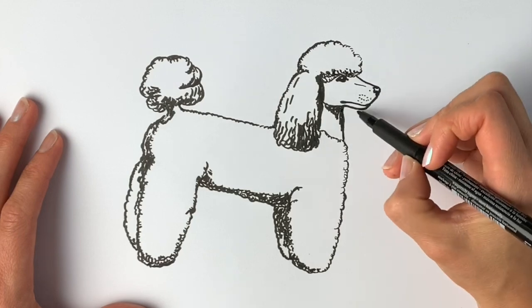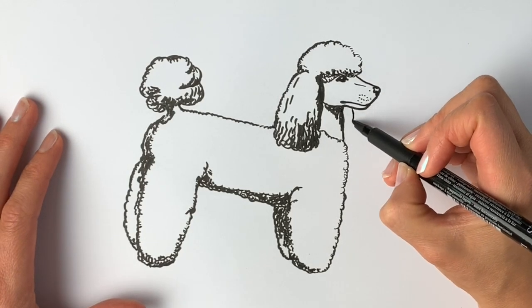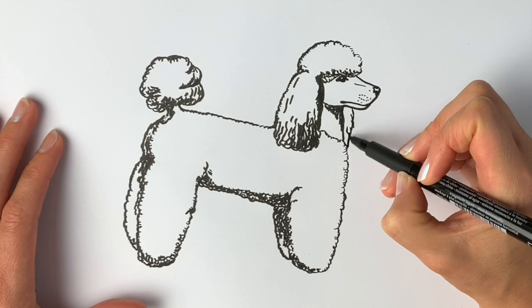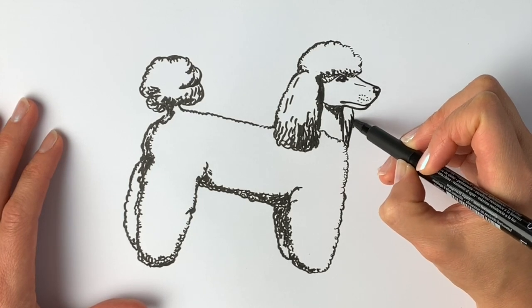And then we've forgotten to do the other ear, so that one's just poking out - you can just see a bit of it here. So doing those long wiggly lines again.